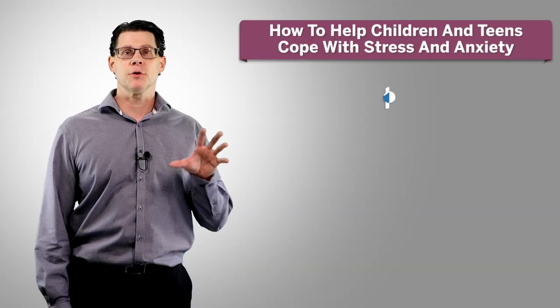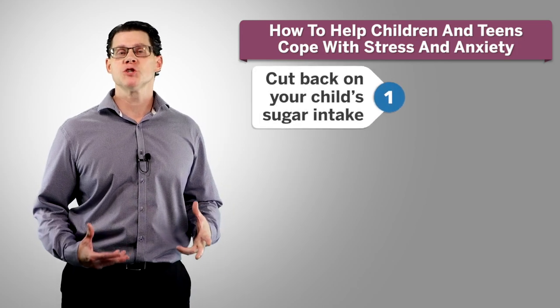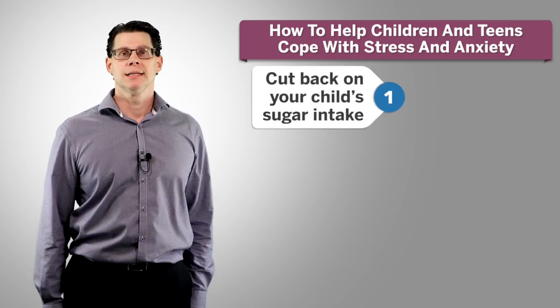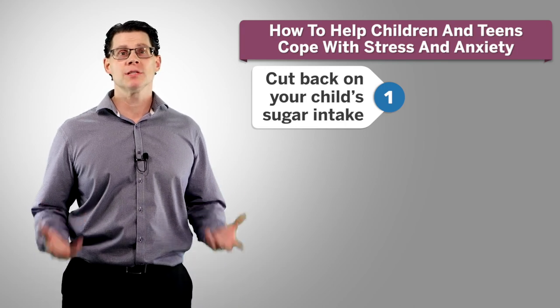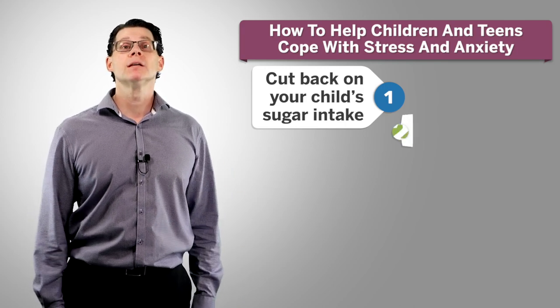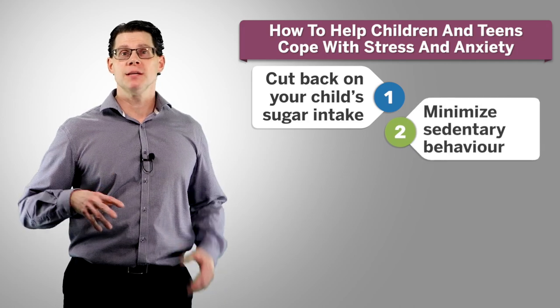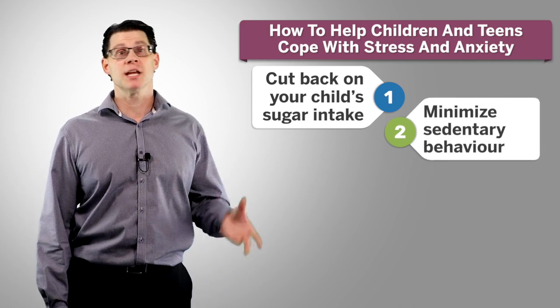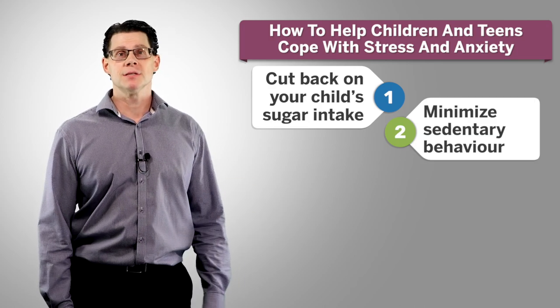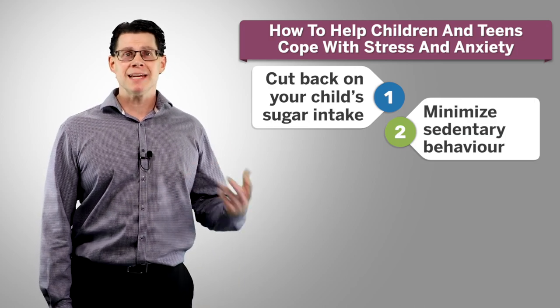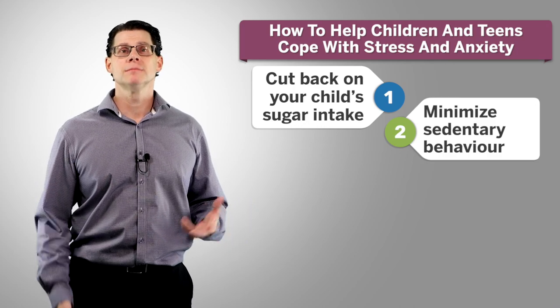To provide a quick recap, first, you want to cut back on your child's sugar intake whenever possible. As little as 67 grams of sugar a day has been shown to increase levels of stress and anxiety. Second, encourage your child or teen to minimize sedentary behaviors, such as sitting for extended periods of time, watching TV, or spending time on devices. And the more you can replace sedentary behaviors with physical activity, the better.